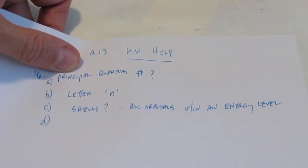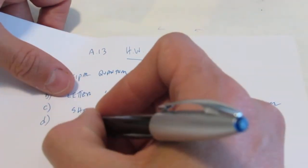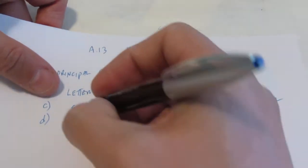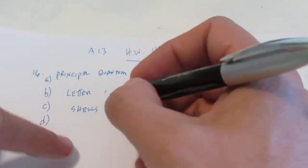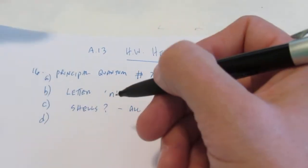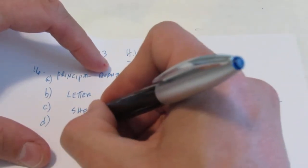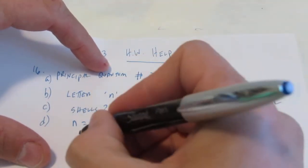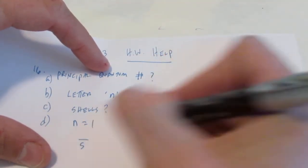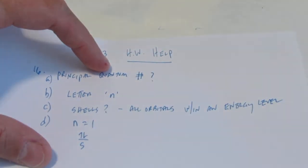And then letter D asks, how does N relate to the number of electrons allowed per energy level? So how does N relate to the number of electrons? We know that N tells us what energy level we're in, doesn't it? And as N gets bigger, what happens to the number of electrons that we can fit there? Well let's talk about that for a second. When N equals 1, we're in the first energy level. And you know in the first energy level there's one sublevel, it's called S, and it can hold a pair of electrons. So the first energy level can only hold two electrons.